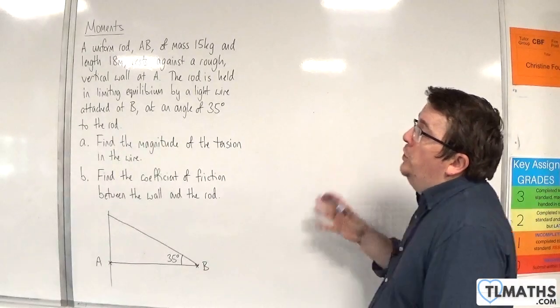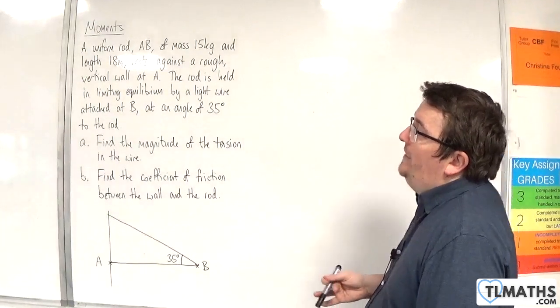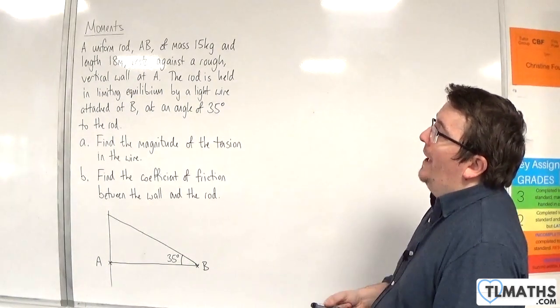In this video we have a uniform rod AB of mass 15 kilograms and length 18 meters, resting against a rough vertical wall at A.